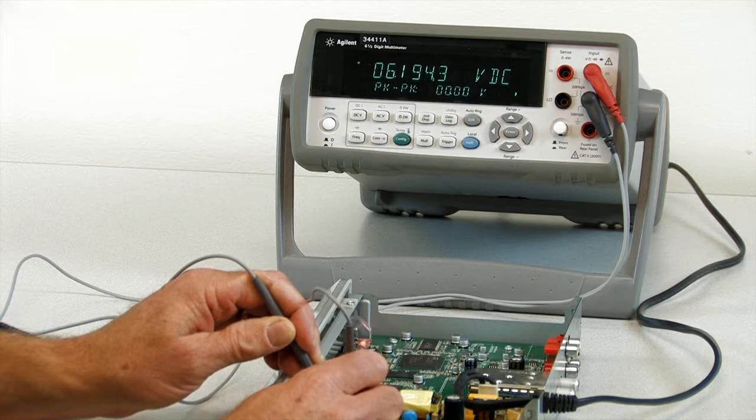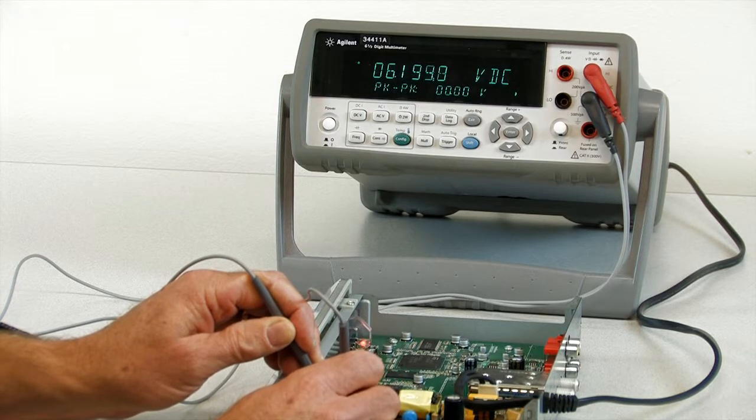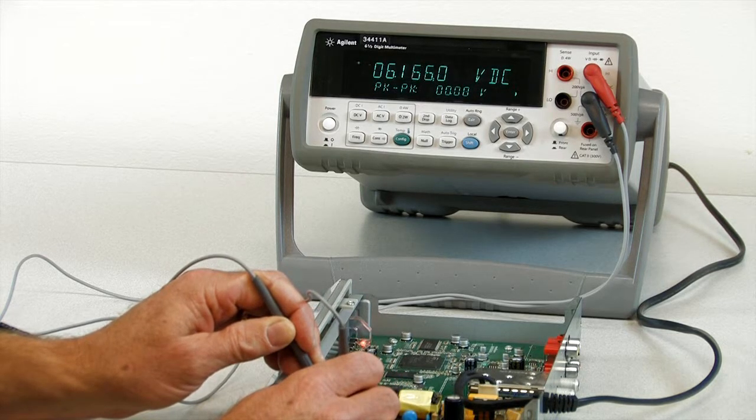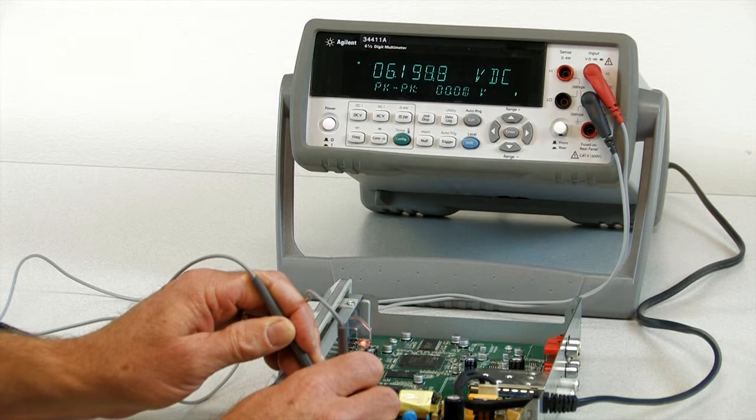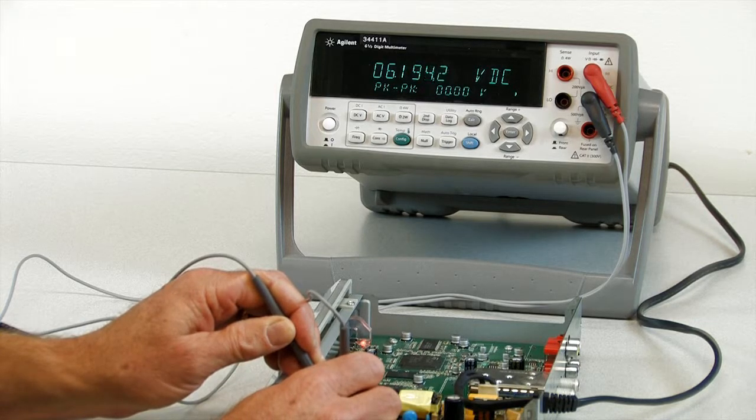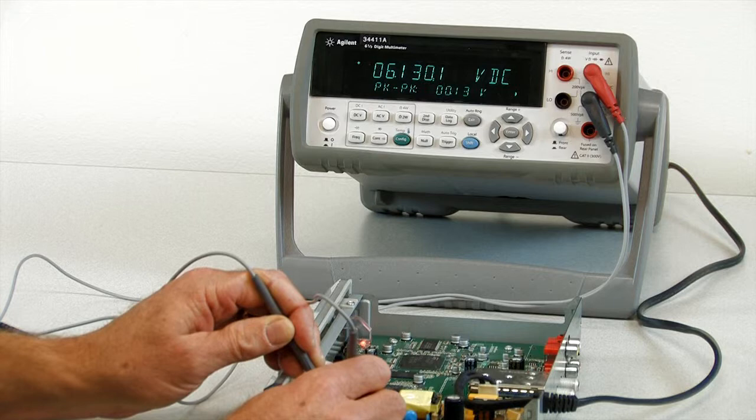We'll move on to the 5V supply. Once again, it's reading quite high. It's 6.2V approximately on the DC display, and again, it's not very noisy, as we'd expect.